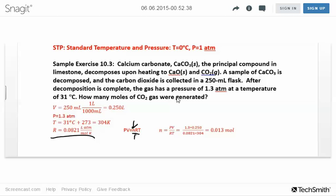1.3 times 0.25 divided by 0.0821 times 304. If you're wondering why I rounded to 0.0821 instead of 0.08206, that's fine. I'll always give you R, so you don't have to memorize it. After you work that out, you get 0.013 moles.